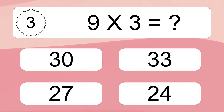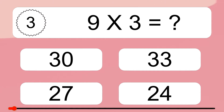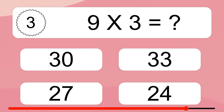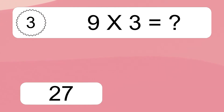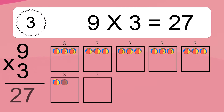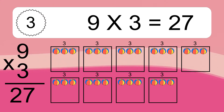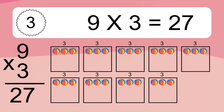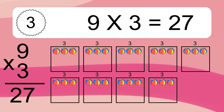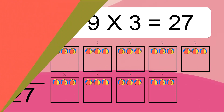9 times 3 equals what? 9 times 3 equals 27. We have 9 boxes and each box has 3 colorful balls inside. If you count all the balls in all the boxes together, you will have 9 times 3 balls. This equals 27 balls.